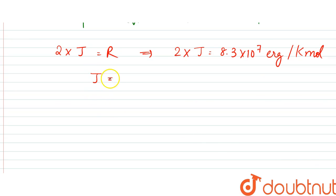So J from here would be equal to 4.15 into 10 to power 7 erg per calorie. So that is the answer. Thank you.